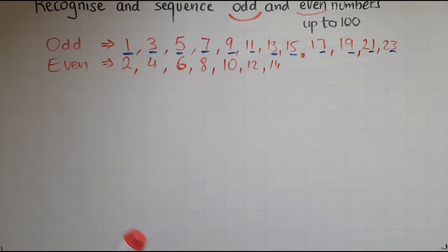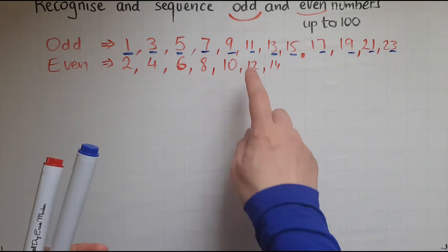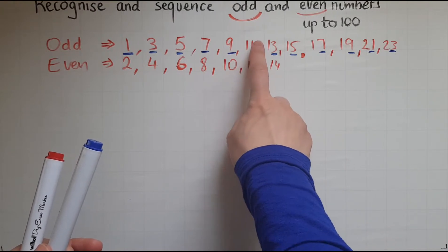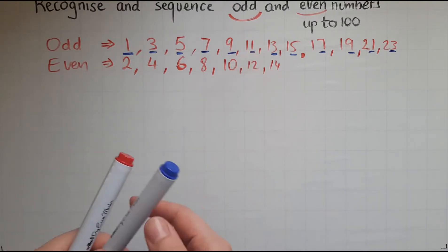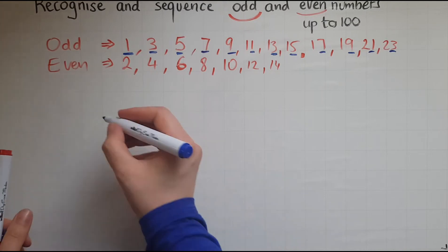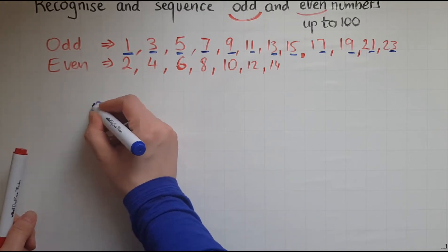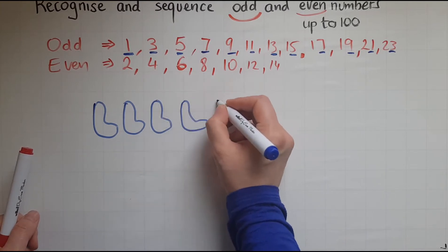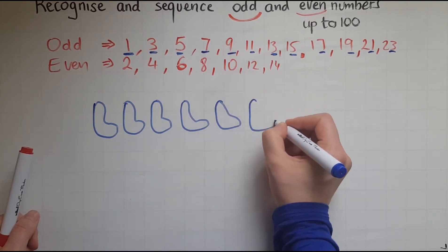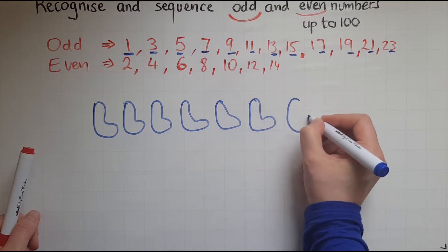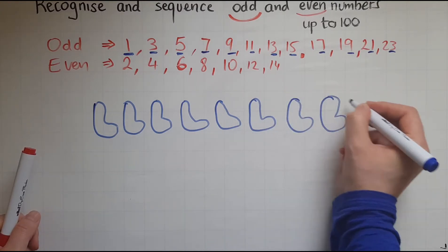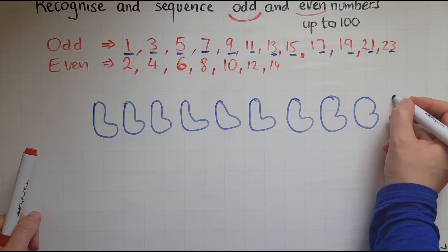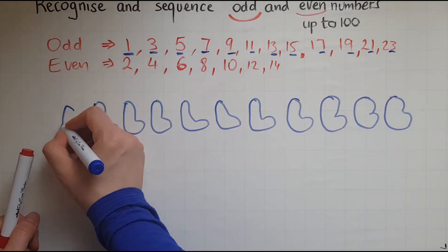And why is that the case? If you look at 11, for instance, so 1 is odd, 11 is going to be odd. So you can imagine there being socks. So 1 sock, 2, 3, 4, 5, 6, 7, 8, 9, 10, 11.